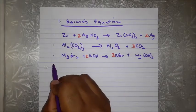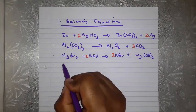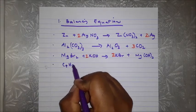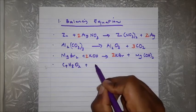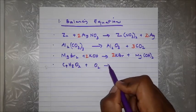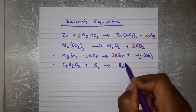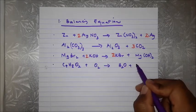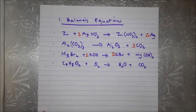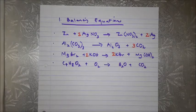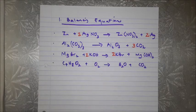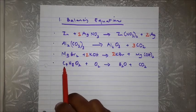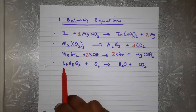The last equation is C₄H₈O₂ + O₂ → H₂O + CO₂. Importantly, oxygen will be the last element we balance because any coefficient placed in front of O₂ will only affect oxygen. Let's start with carbon.